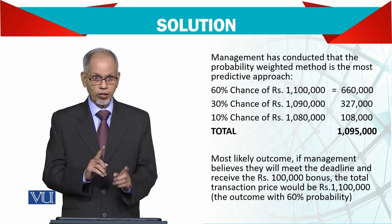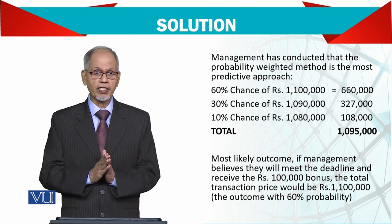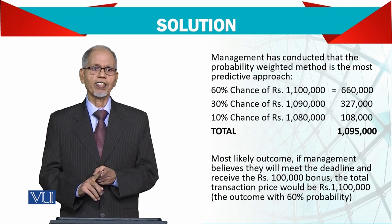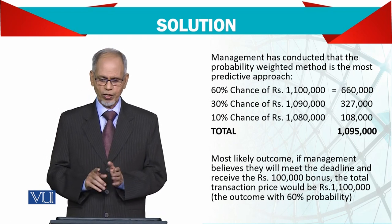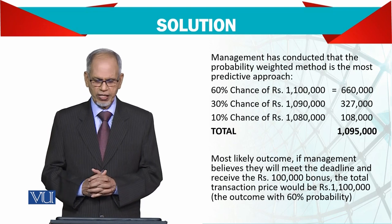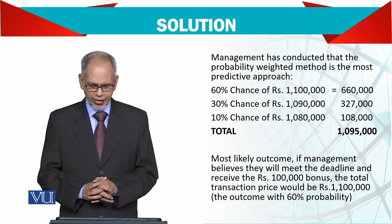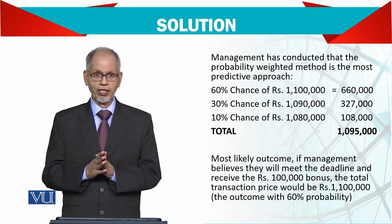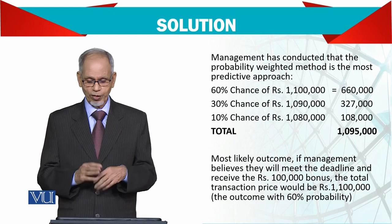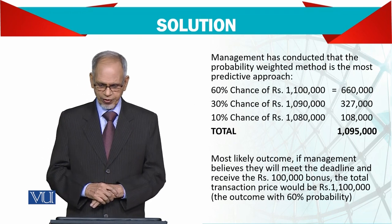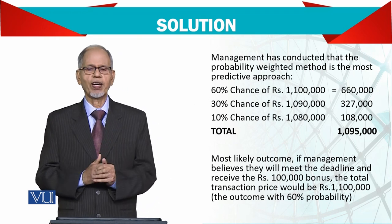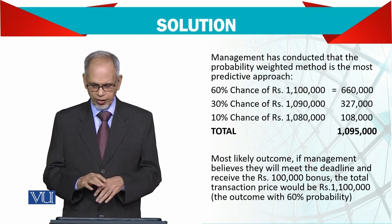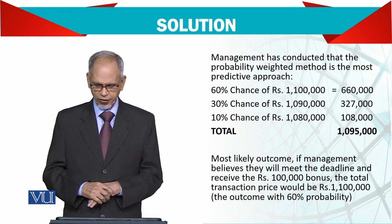Under the probability-weighted method: there is a 60% chance of completing on time, giving a total of 1.1 million rupees — so 60% of 1.1 million is 660,000. There is a 30% chance of one month delay, and 10% chance of a two month delay. The total expected value across all outcomes is calculated accordingly.